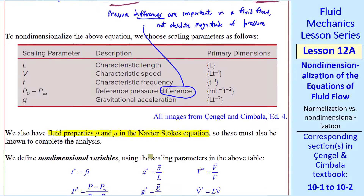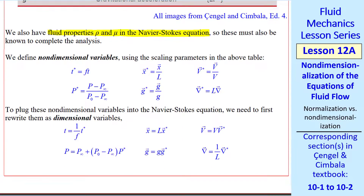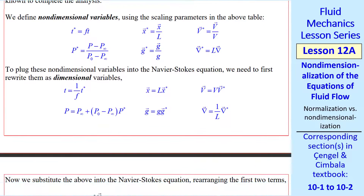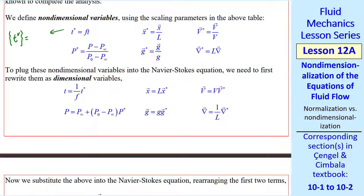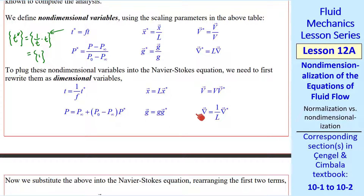These will also be used to complete the analysis. We define non-dimensional variables using these scaling parameters. Here's a list: we recognize x*, y*, z*, and V* from the continuity equation, and we also define g* = g/g, p* = (p - p_inf)/(p₀ - p_inf), and t* = f·t — all non-dimensional. We can verify: t* is frequency times time, which is indeed non-dimensional. Pressure over pressure is also non-dimensional. We then rewrite these as dimensional variables: t = t*/f, p = p_inf + (p₀ - p_inf)·p*, and so forth for all variables.